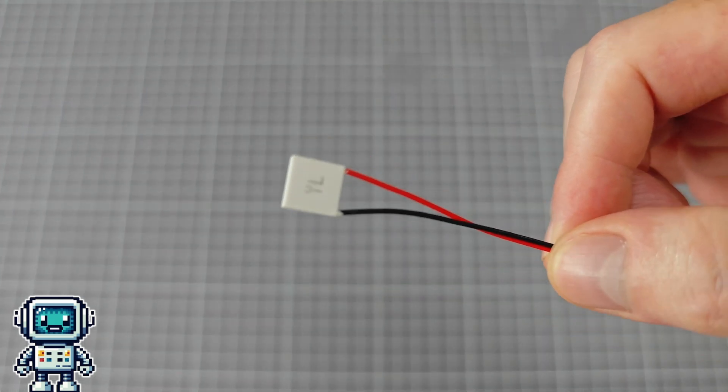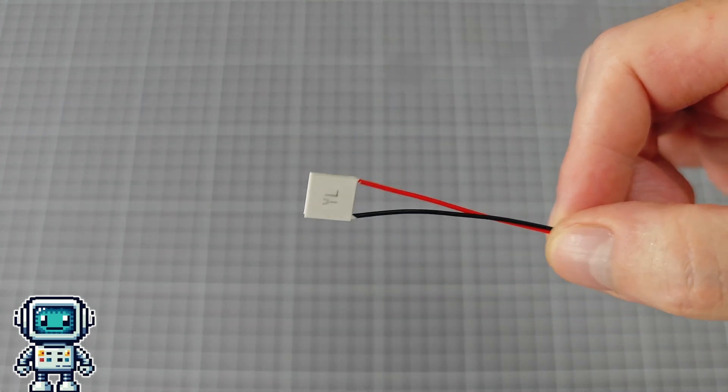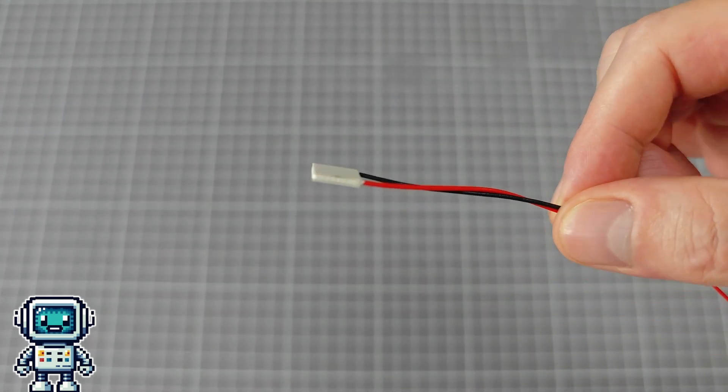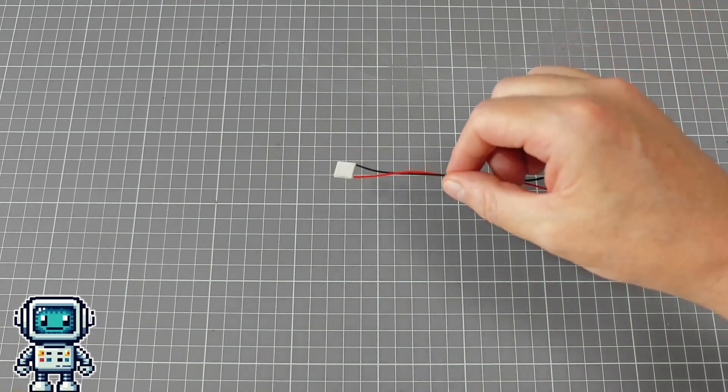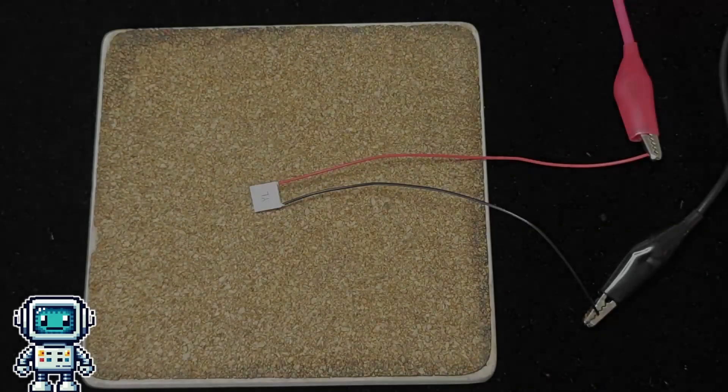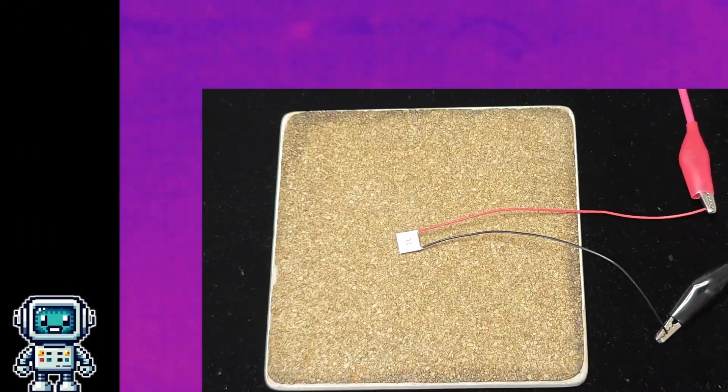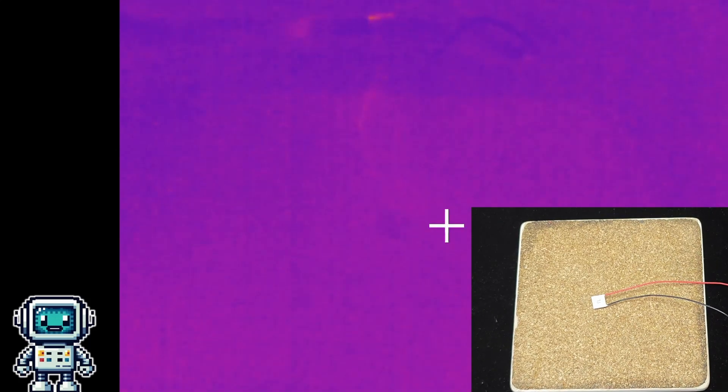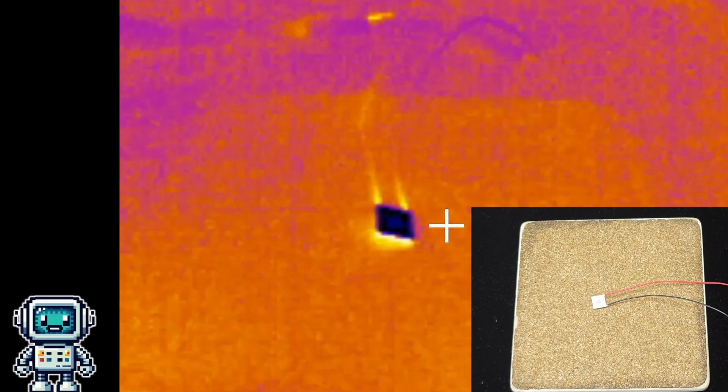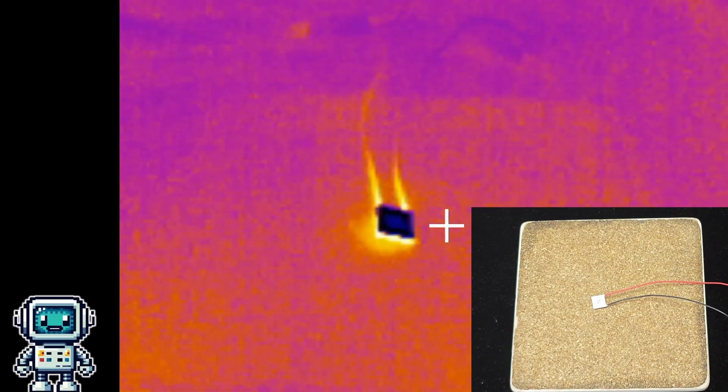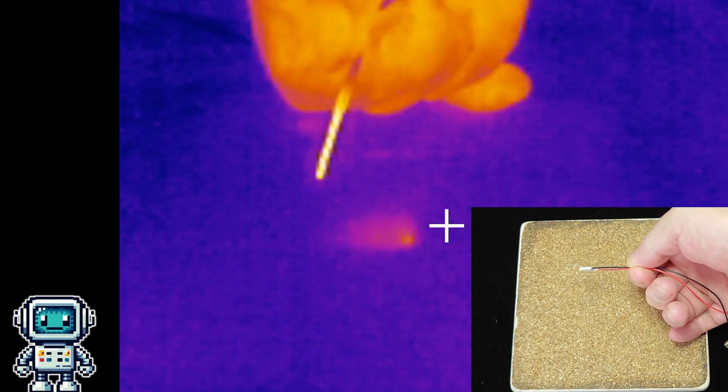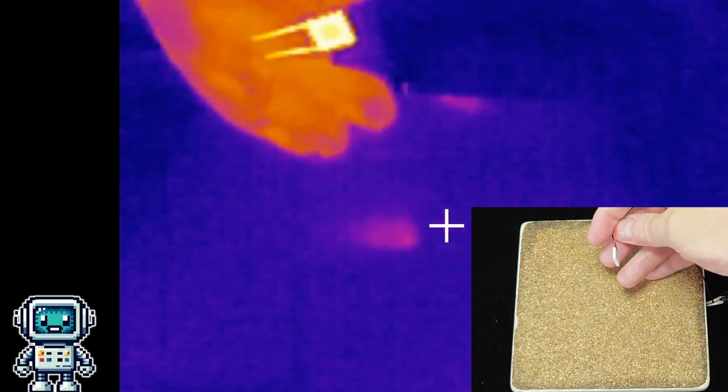This is a Peltier effect heat pump. When electric current is passed through it, heat energy is taken from one side and passed to the other. This has the effect of making one side of the device become colder whilst the other gets hotter. Here you can see that happening in the thermal camera image. The dark square is the cool side of the heat pump, and on the other side we can see that heat is then released.